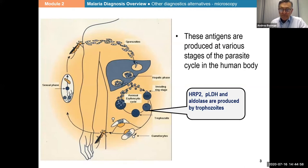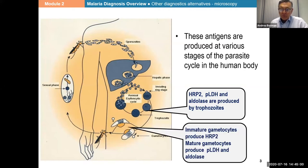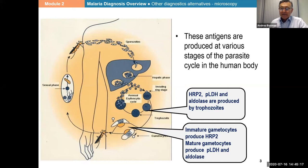When we look at what is available on the gametocytes, the younger gametocytes have HRP2 antigens, and the mature gametocytes have PLDH and aldolase. So it's something to remember that gametocytes as well may express these antigens.